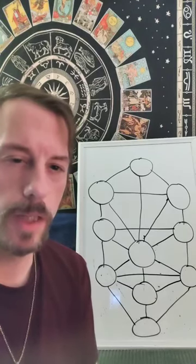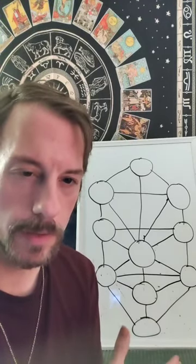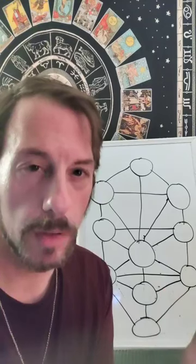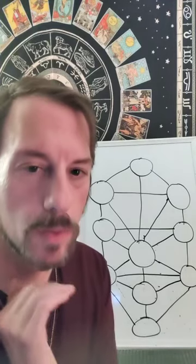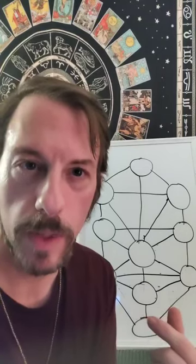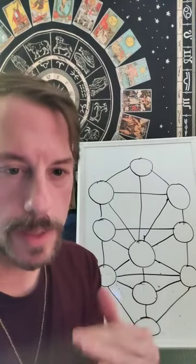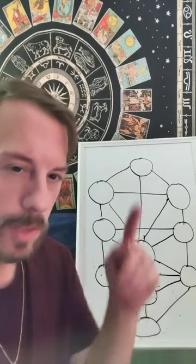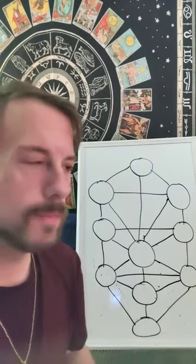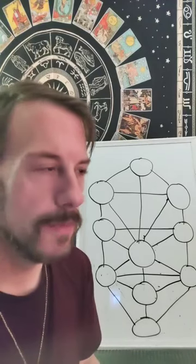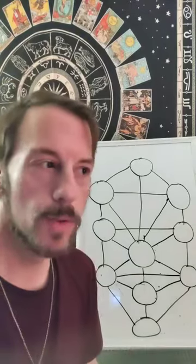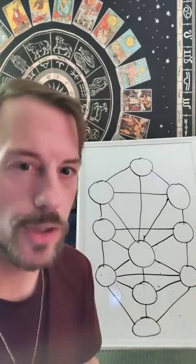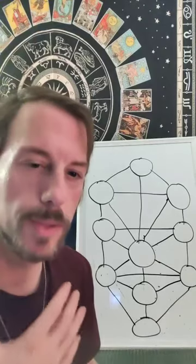The Tree of Life is composed of ten spheres called Sephirot. The 'ot' ending is the feminine plural in Hebrew — Sephirah is singular, Sephirot is plural. These ten Sephirot represent aspects of consciousness. They represent different qualities or attributes of the divine, different forces within our psyche, different aspects of nature. They represent man and God — or woman and goddess — it's not gender specific.